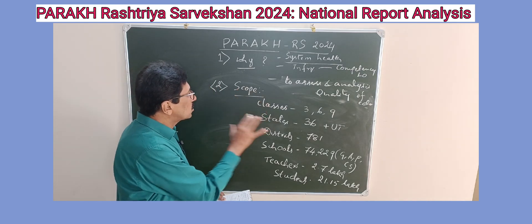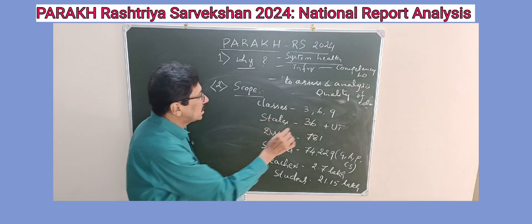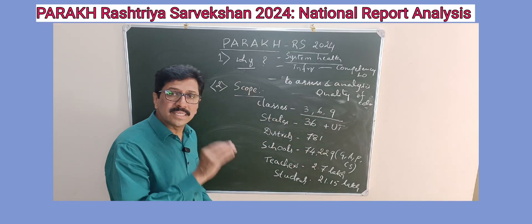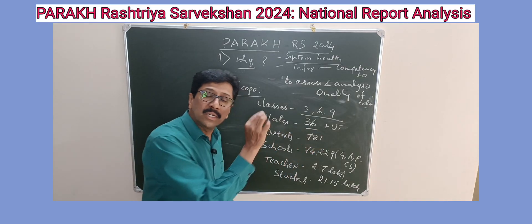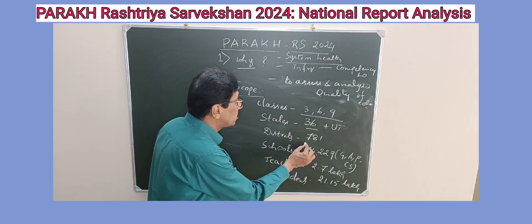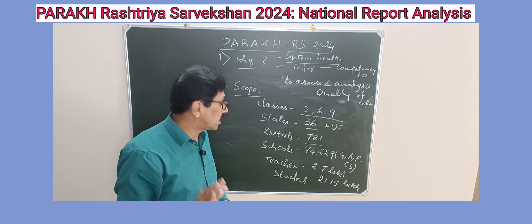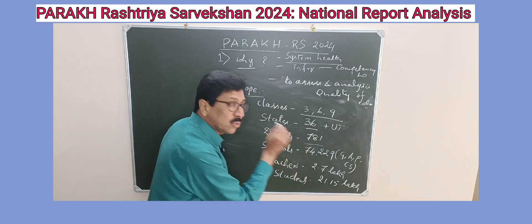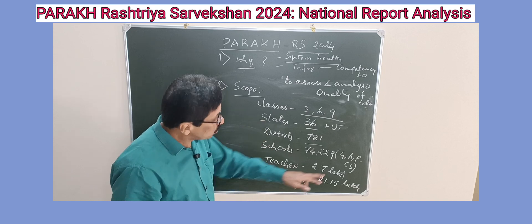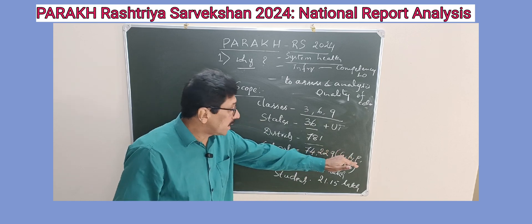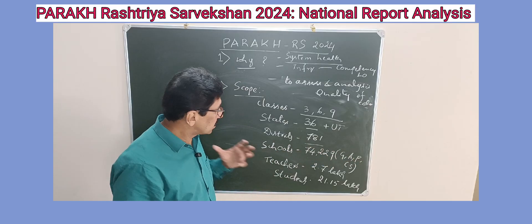The scope of this assessment study covers three different classes: third, sixth, and ninth. It is conducted in all 36 states and union territories, across 781 districts. Across the country, this assessment has been conducted in 74,229 schools — government, aided, private, and central government schools.